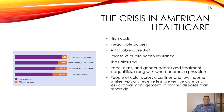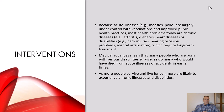People of color across class lines and low-income whites typically receive less preventative care and less optimal management of chronic diseases than others. There's a significant proportion of poor whites who experience poverty's effects without the additional barrier of racial oppression. Acute illnesses like measles and polio are largely under control due to vaccinations and public health practices. Most health problems today are chronic diseases such as arthritis, diabetes, and heart disease, or disabilities like back injuries, hearing or vision problems, which require long-term treatment.